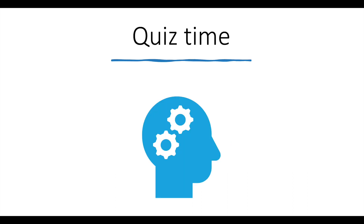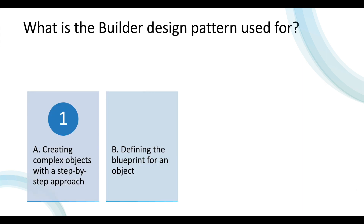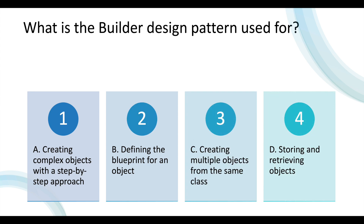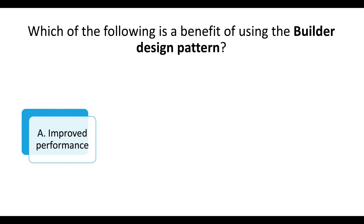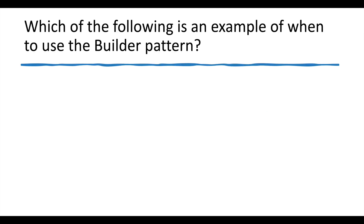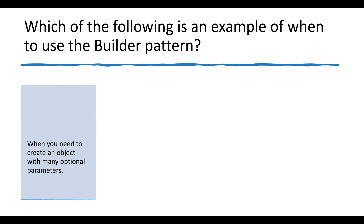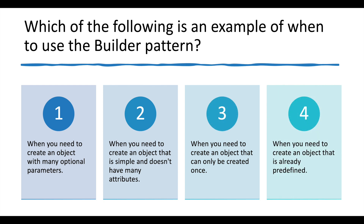Now it's quiz time. Let's attempt a few MCQs based on what you have understood. Question one: What is the Builder Design Pattern used for? Options: creating complex objects step-by-step; defining the blueprint of an object; creating multiple objects from the same class; or storing and retrieving objects. Question two: Which of the following is a benefit of using the Builder Design Pattern? Options: improved performance; reduced complexity of code; increased encapsulation; or all of the above. Question three: Which of the following is an example of when to use the Builder Design Pattern? Options: when you need to create an object with many optional parameters; when you need a simple object without many attributes; when an object can only be created once; or when the object is already predefined. Comment your answers below.